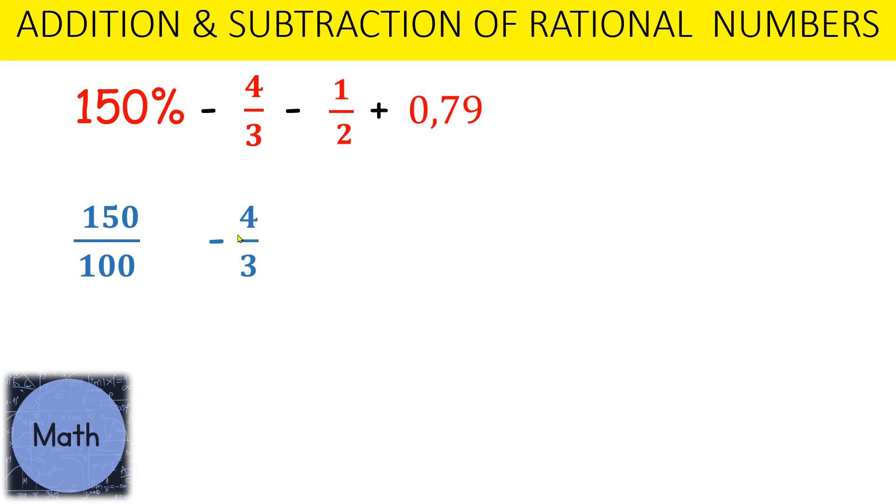Minus 4 over 3. Here the numerator is larger and the denominator is smaller. Minus a half, plus we have 7 and 9. Here's our comma, this is our 10th position and our 100th position, so it's going to be 79 over 100.